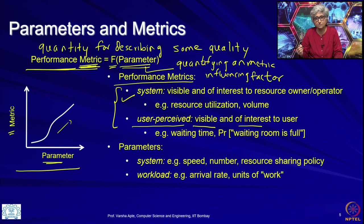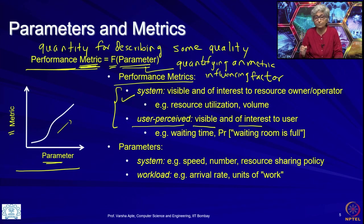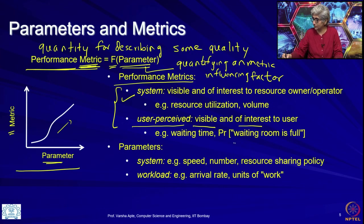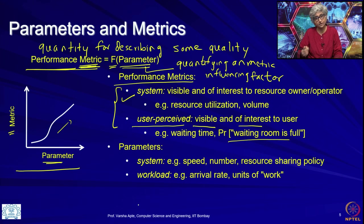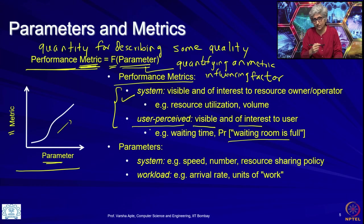Similarly, in networks and systems, the waiting time will be experienced by a packet. The packet is not a person, but it is a metric that belongs to the packet and is indirectly experienced by the human who is sending the packet. Similarly, if packets came to the network buffer but were dropped, they did not even have space to queue. That is something the packet experienced, and the sender of the packet will note that the packet was dropped. So one way or the other, it concerns the user.